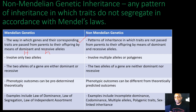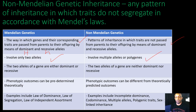But if you look at non-Mendelian genetics, patterns of inheritance in which traits are not passed from parents to their offspring by means of dominant and recessive alleles — there are other factors involved. Mendelian genetics involve only two alleles, while non-Mendelian genetics involve multiple alleles or polygenes, so you're going to have more than two alleles involved.